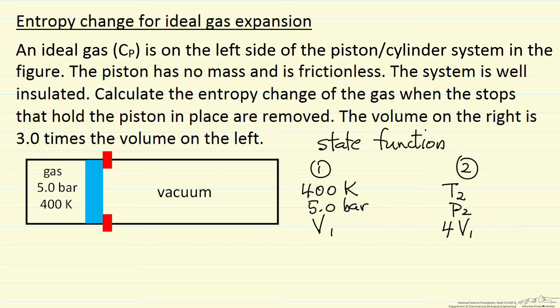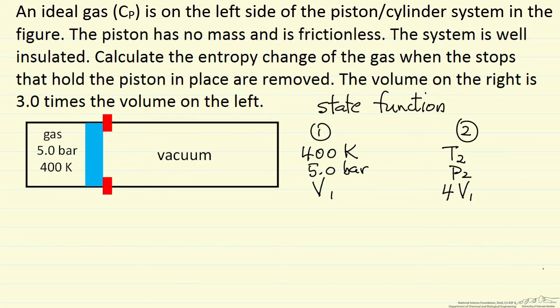We are going to first apply the first law, closed system: delta U is Q plus W. The problem says it is well insulated, so it is adiabatic, so Q is zero. We are expanding into a vacuum, the piston has no weight, it is frictionless, so there is no work, so delta U is equal to zero.